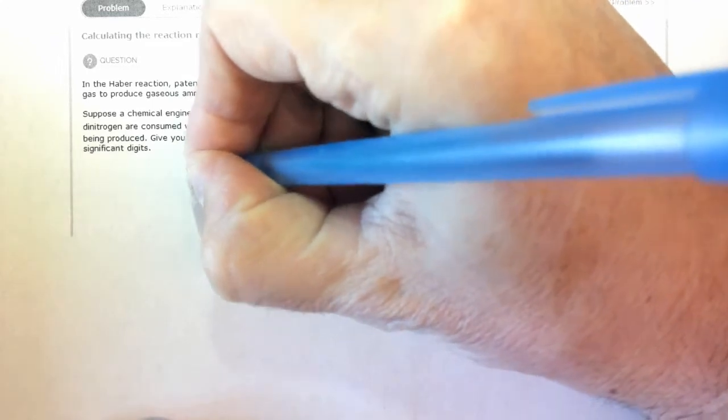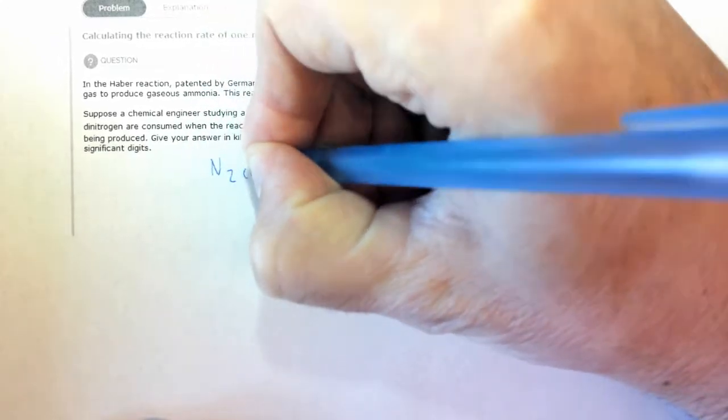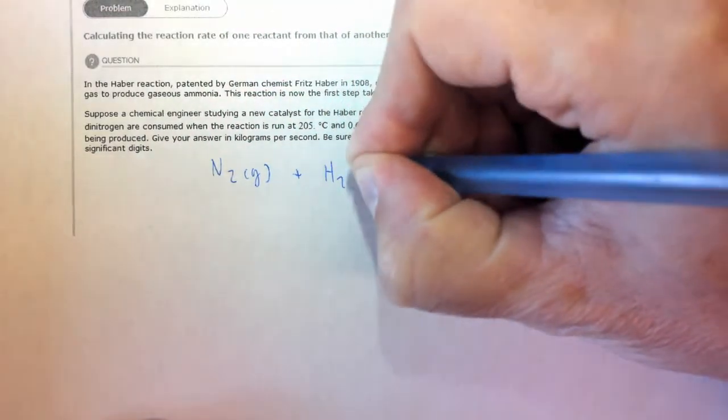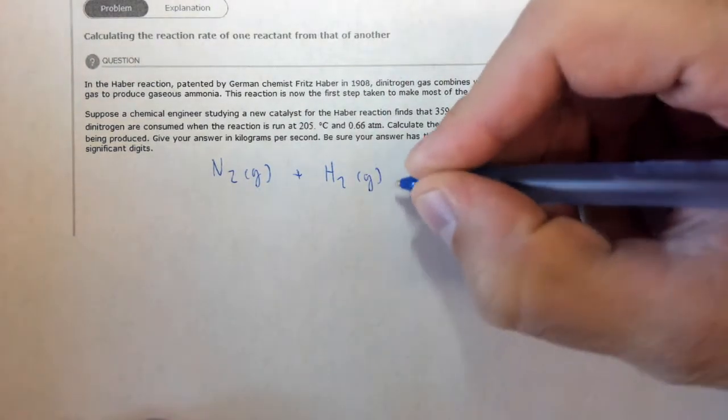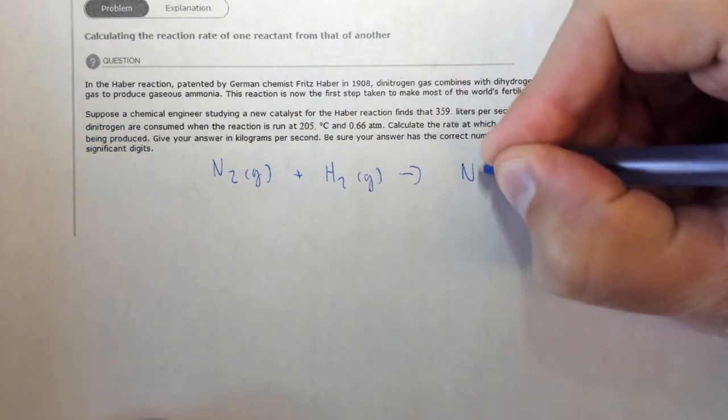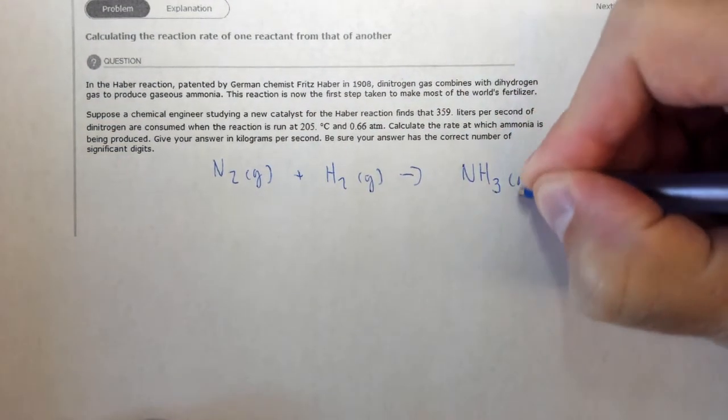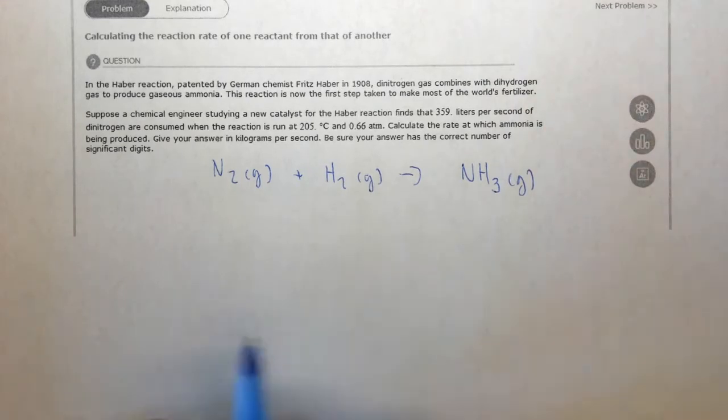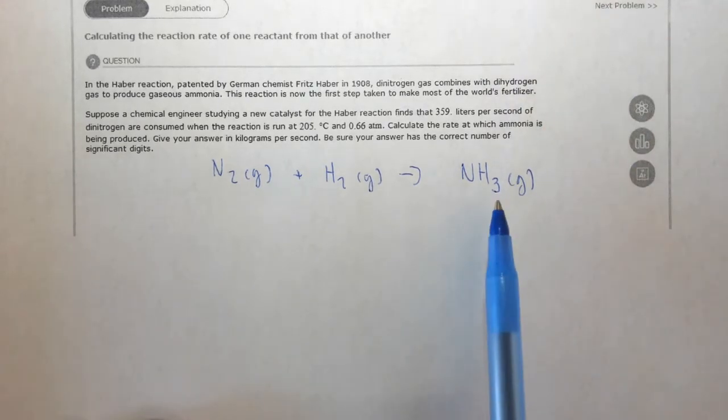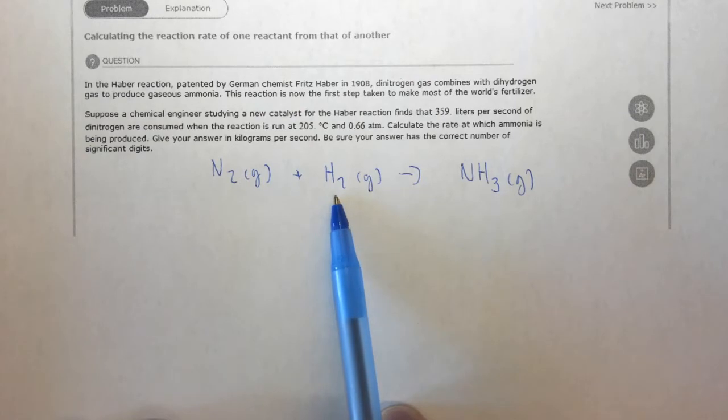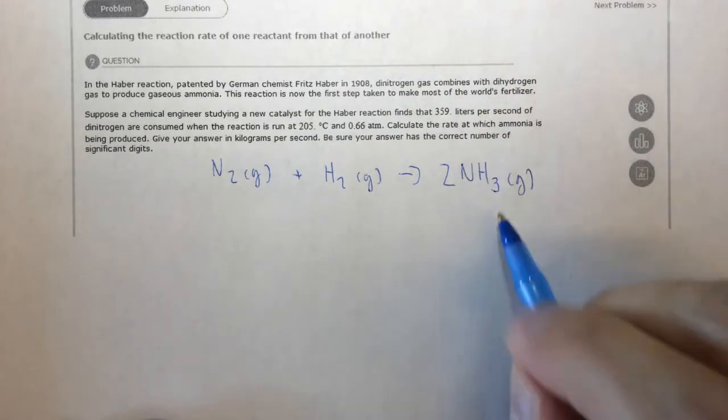So in this case, our balanced chemical equation is nitrogen gas plus hydrogen gas, both are diatomic of course, yields ammonia, which happens to be NH3 gas. So we need to balance this. If we have three hydrogens on this side and two on this side, that's not going to work. So I'm going to put a two here.